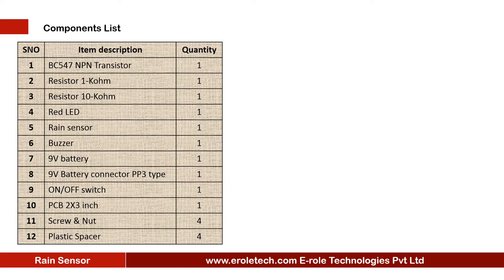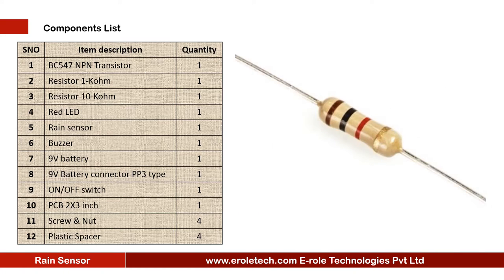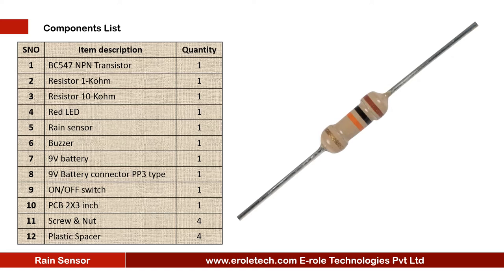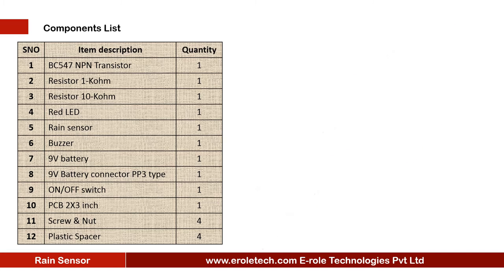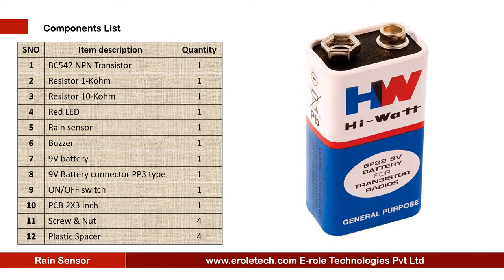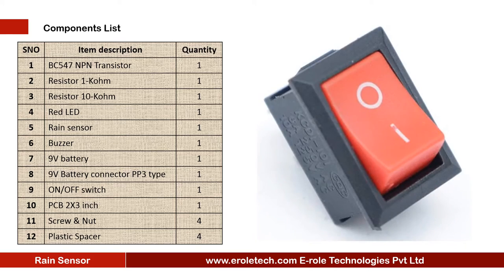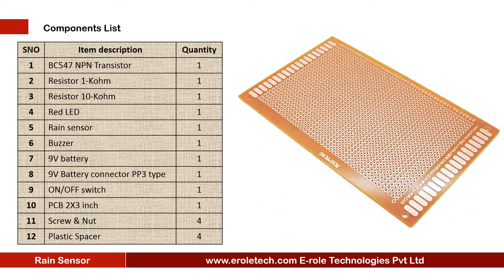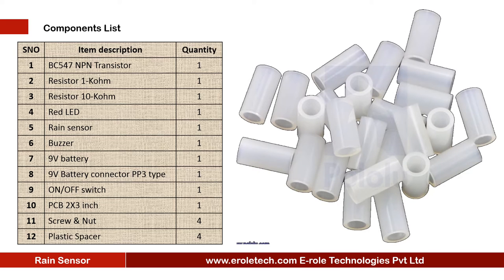These are the components needed for this project: one NPN transistor BC547, one 1 Kilo Ohm resistor, one 10 Kilo Ohm resistor, one red LED, one rain sensor, one buzzer, one 9V battery, one PP3 battery connector, one ON-OFF rocker switch, one zero PCB, four screws with nuts, and four plastic spacers.